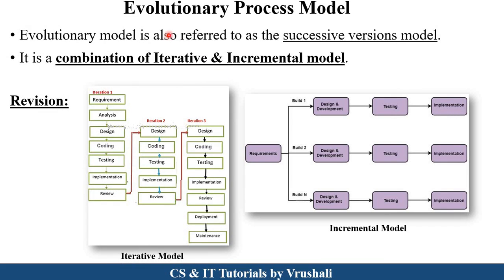The first thing is what exactly is the evolutionary process model. The evolutionary process model is also called the successive version model. Why? Because it is a combination of the iterative and incremental model. We already discussed the iterative incremental model in detail in the previous session — here we just take a revision of this model first.